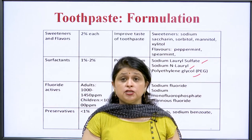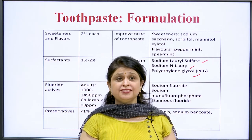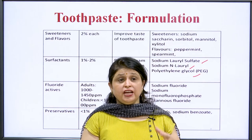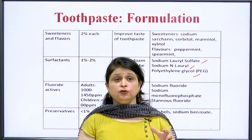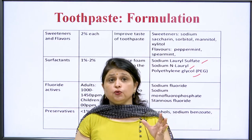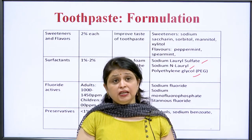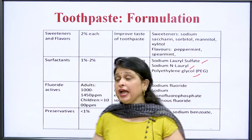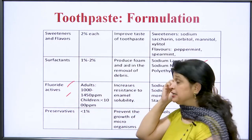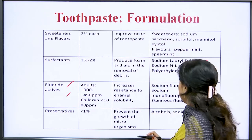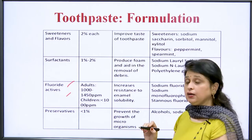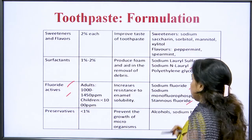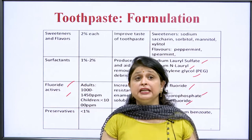Some toothpaste formulations are also medicated — they can act as antibacterial or antifungal agents. We sometimes need to incorporate such agents to cure the gums and control antimicrobial impact on the teeth. The main medicated ingredient we add is fluoride actives. Examples of fluoride agents include sodium fluoride, sodium monofluorophosphate, and stannous fluoride. These are incorporated into medicated toothpaste.